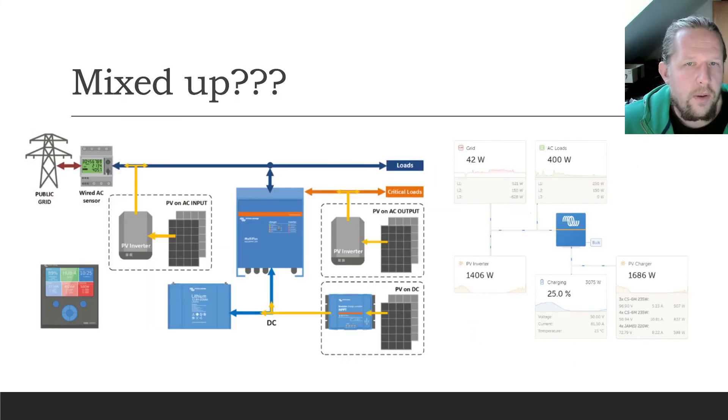So what about the mixed up version of this installation? I think it's a good solution. You have three possibilities of bringing the solar energy to the battery and to the system. You have here the MultiPlus as shown before and the battery. Here is DC charging with the MPPT. DC to DC charging. You can fast charge the battery. No matter how much power from AC to DC the MultiPlus can bring.